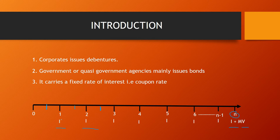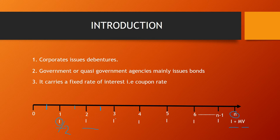In year one we receive interest two times, so we get half the annual interest each time. For example, if the coupon rate is 10% and the face value is Rs. 1000, the annual interest is Rs. 100. With semi-annual payments, you receive Rs. 50 at the end of six months, Rs. 50 at the end of one year, Rs. 50 at the end of one and a half years, and so on.